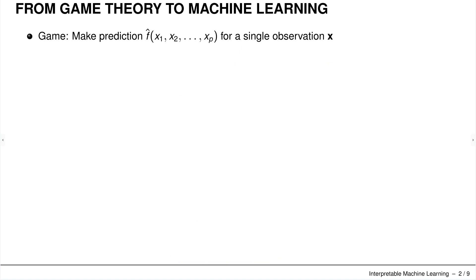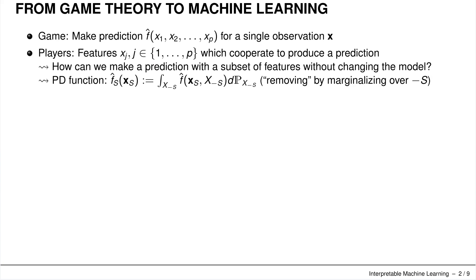We have a model which gives us a prediction based on all features for a single observation x. Each feature is treated as a player — we have fixed feature x_j and p different features — and they cooperate to produce a prediction.